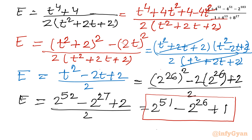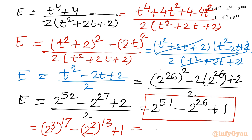In another form, we can write the same answer: 2 power 51 as 2 cubed times 17, so 8 power 17; and 2 raised to the power 26 as 2 times 13, so 4 power 13. The ultimate answer in another form is 8 power 17 minus 4 power 13 plus 1. I hope friends this video will be meaningful to you. Do not forget to like, share, and subscribe. Bye-bye till next video. Good luck and take care of yourself.